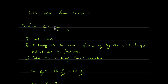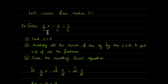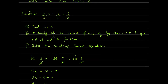The review equation is two-thirds x minus five-sixths equals three-fourths. The first thing we always did was find the LCD of the denominators — three, six, and four — which turns out to be 12. 12 is the smallest number that can be divided by three, by six, or by four.